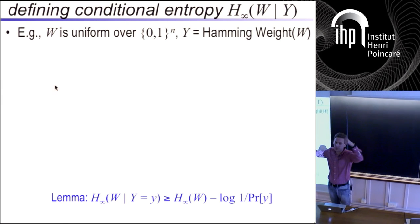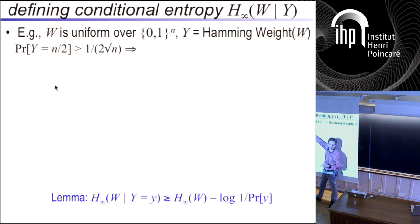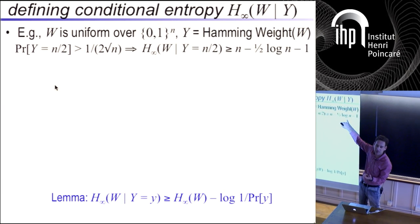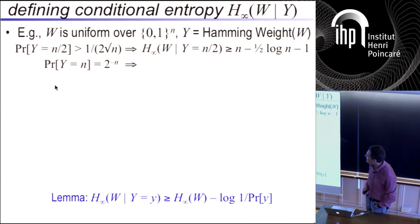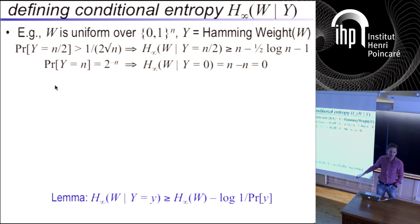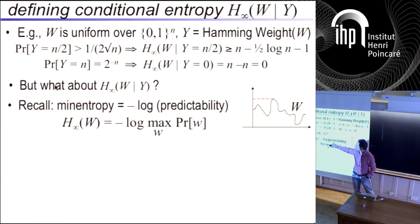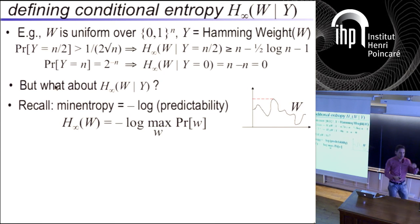If capital W is uniform and Eve learns its Hamming weight, the probability that the Hamming weight is exactly half is roughly 1/√n. In that case the entropy goes down by log of that — about half log n bits. If you had a thousand-bit string, you lose about 500 bits by learning its Hamming weight is half. Remember the functional definition of min-entropy: it's the log of the probability that the adversary predicts correctly. We do that in the average case also — you give the adversary a y, and it tries to predict w. That will be our notion of average entropy.